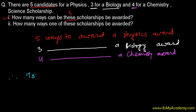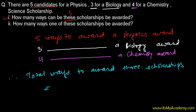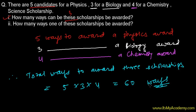Therefore, the total ways to award all three scholarships is: physics can be given in five ways, biology in three ways, and chemistry in four ways. So five times three is 15, and 15 times four is 60 ways. There are 60 ways of awarding these three scholarships — one for physics, one for biology, one for chemistry. This is based on the fundamental principle of multiplication.